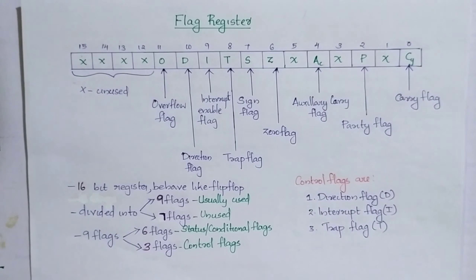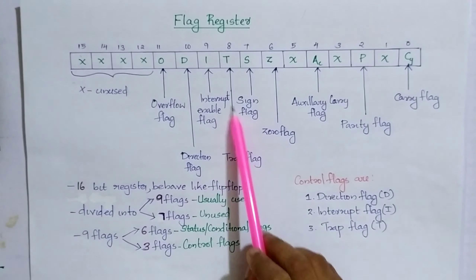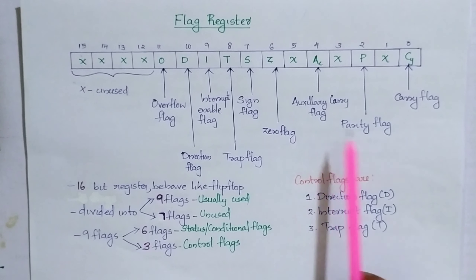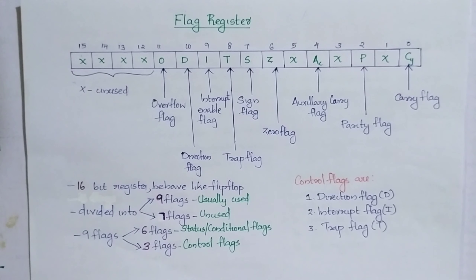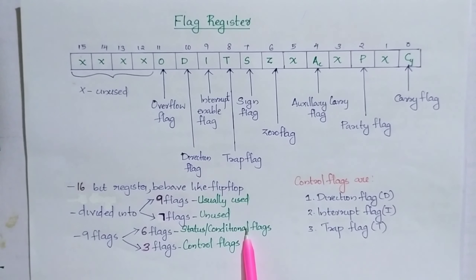Seven flags are unused and nine flags are used. The used nine flags are: overflow flag, direction flag, interrupt enable flag, trap flag, sign flag, zero flag, auxiliary carry flag, parity flag, and carry flag. These nine flags are divided into two groups: six flags are known as status or conditional flags, and three flags are control flags.